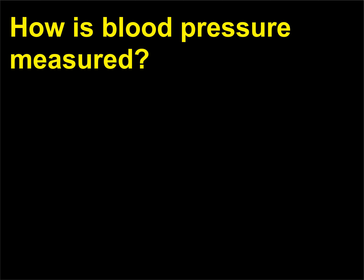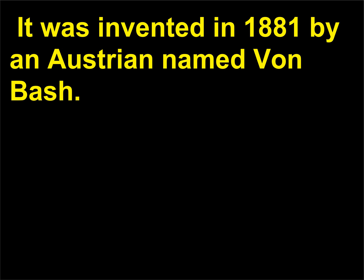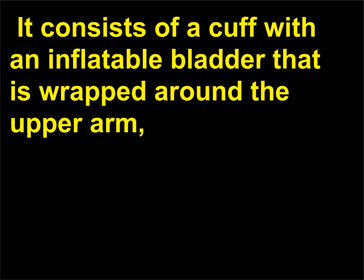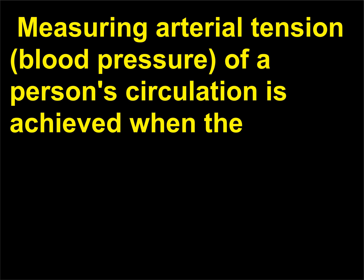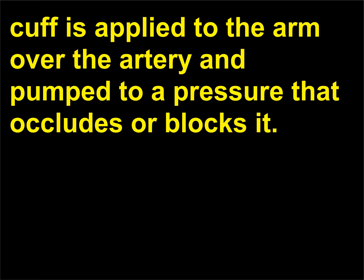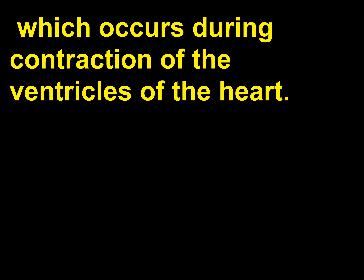How is blood pressure measured? A sphygmomanometer is the device used to measure blood pressure. It was invented in 1881 by an Austrian named Von Basch. It consists of a cuff with an inflatable bladder that is wrapped around the upper arm, a rubber bulb to inflate the bladder, and a device that indicates the pressure of blood. Measuring arterial tension, blood pressure, of a person's circulation is achieved when the cuff is applied to the arm over the artery and pumped to a pressure that occludes or blocks it. This gives the systolic measure, or the maximum pressure of the blood, which occurs during contraction of the ventricles of the heart.